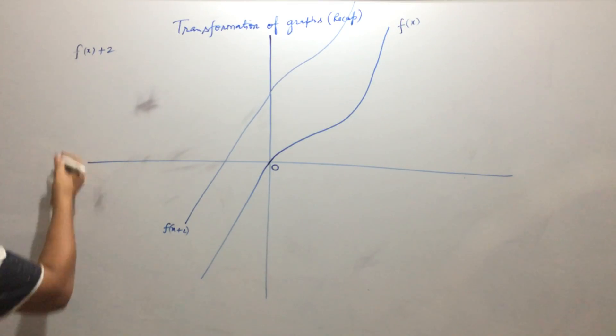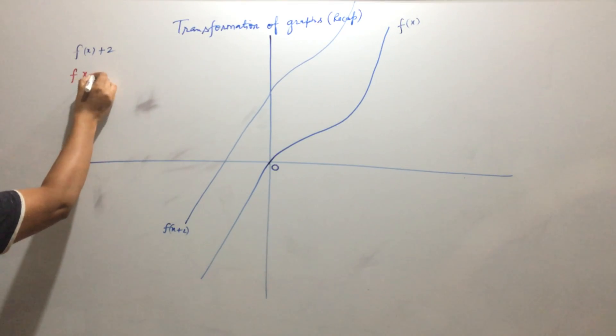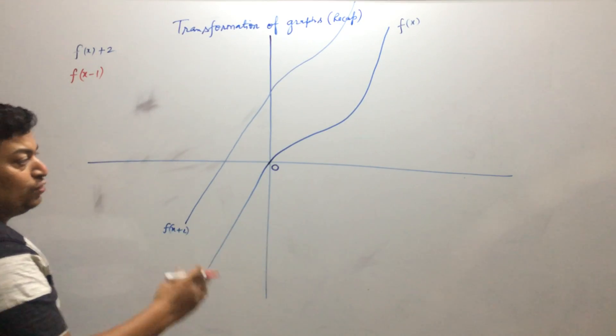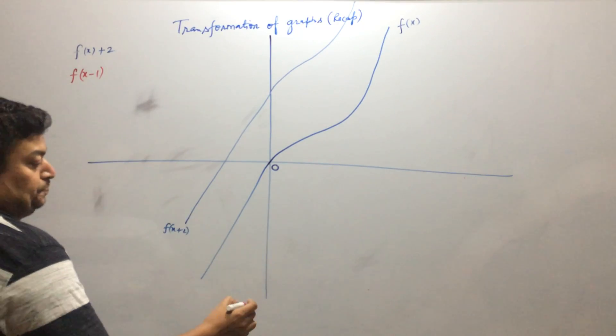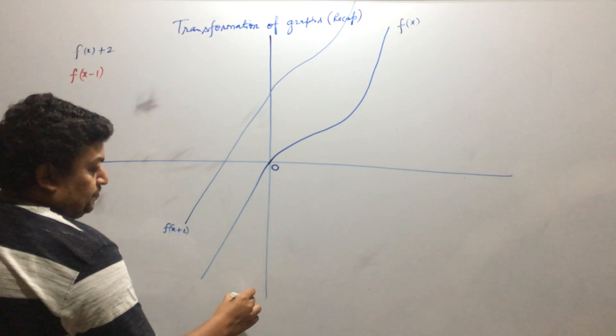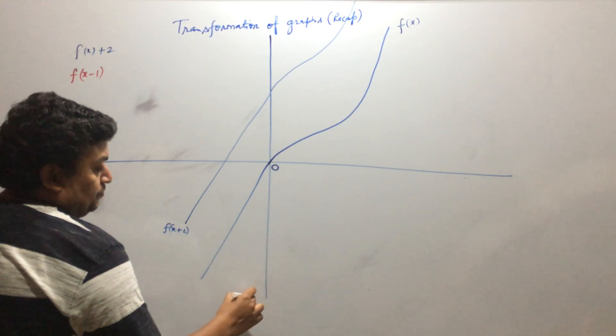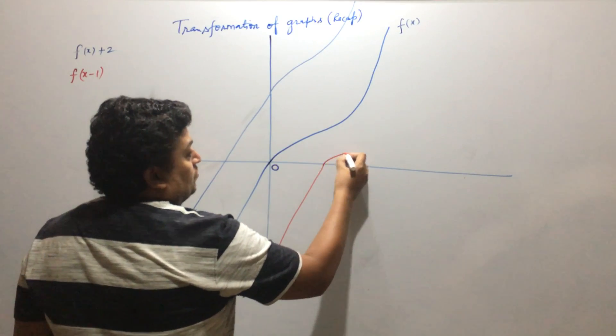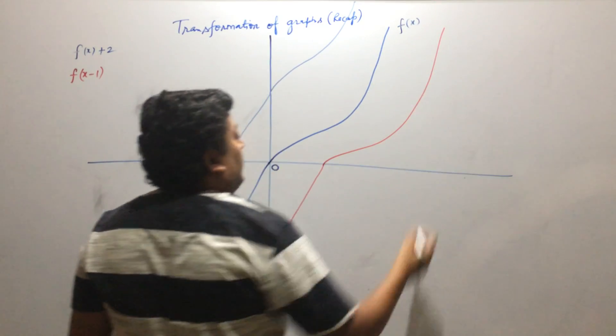Suppose you could draw graph of f of x minus 1, then the whole graph will be shifted 1 unit towards right. So it will become like this.